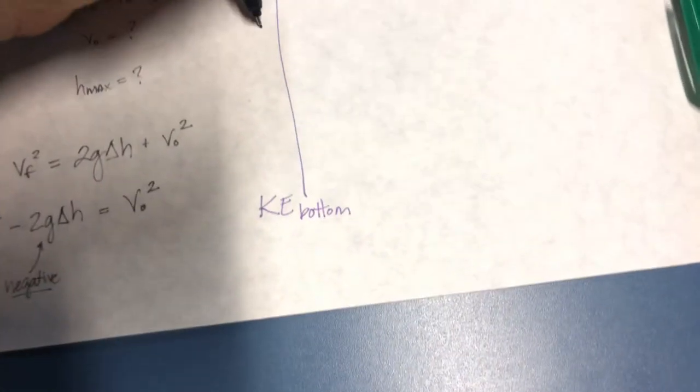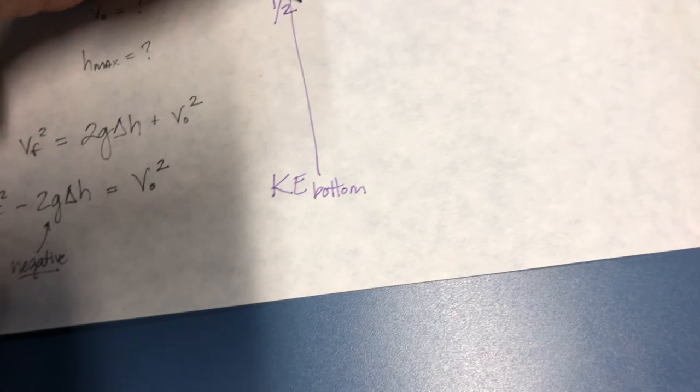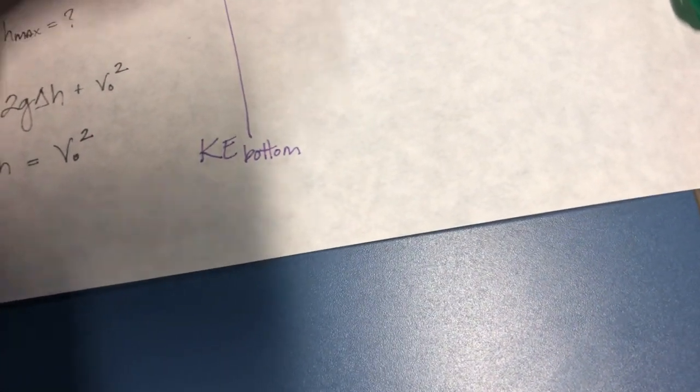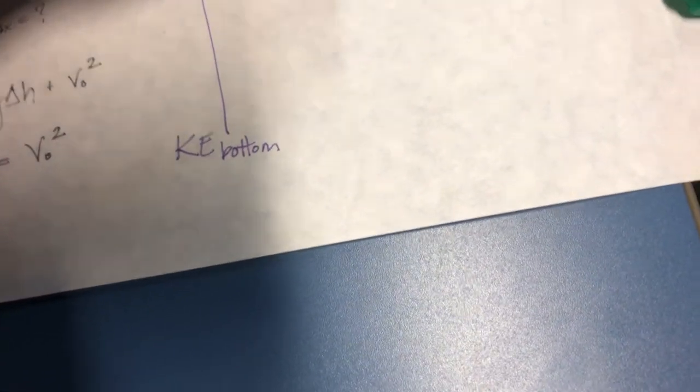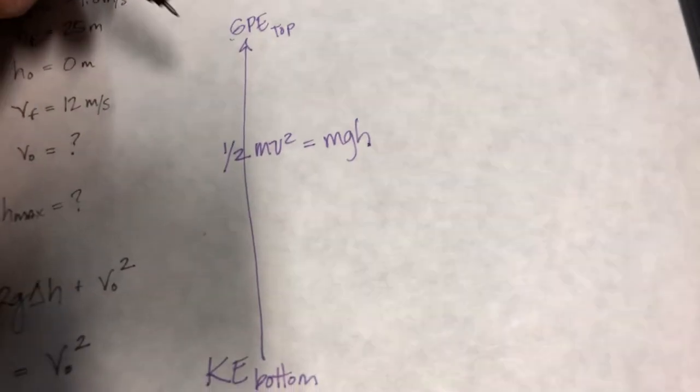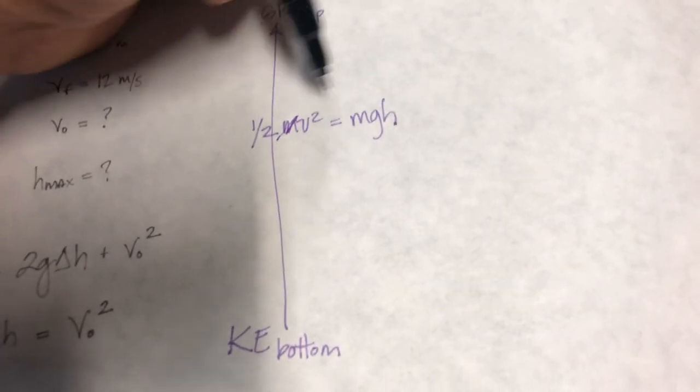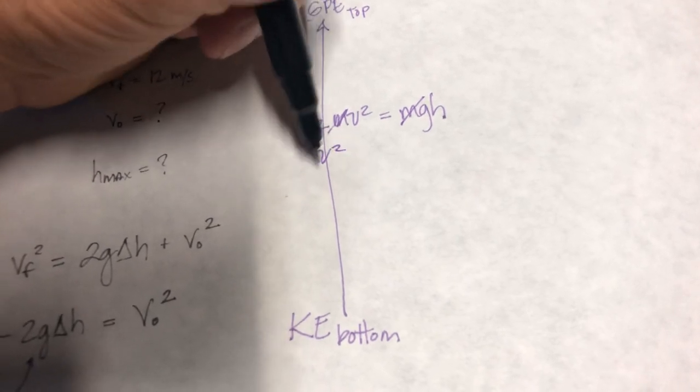That means one half m v squared at the bottom is equal to m g h at the top. And we see m on both sides, we can cancel those out.